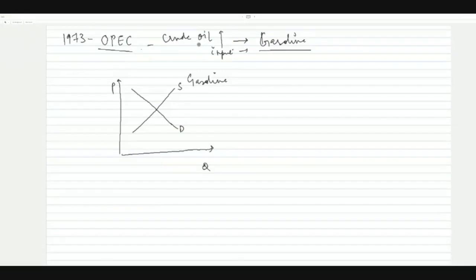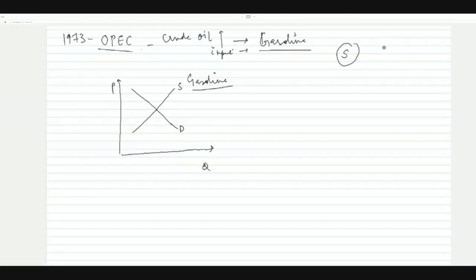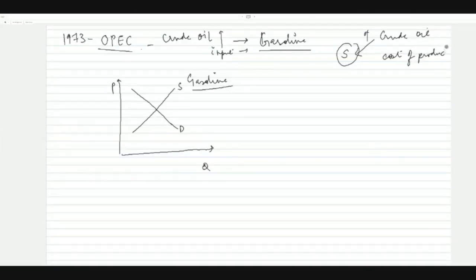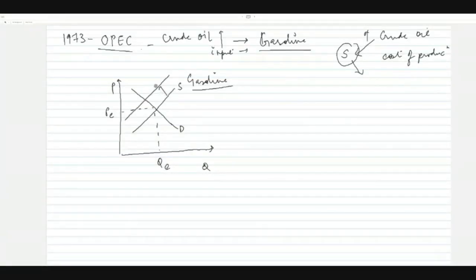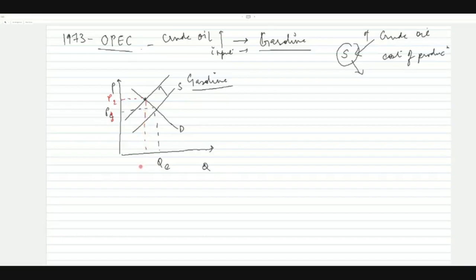This is the initial demand curve and supply curve for petrol before 1973. Because crude oil is used in production, suppliers who make gasoline from crude oil see their cost of production increase. As a result, suppliers will decrease supply — the supply curve shifts leftward. The new price is higher than before — let's call it P2 — and quantity reduces to Q2.